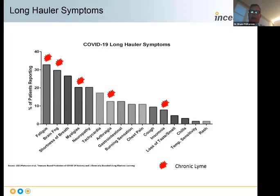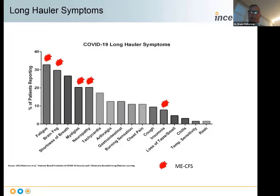The same can be true when we overlaid the ME-CFS major symptoms—fatigue, brain fog, post-exertional malaise. This is an interesting finding given that a JAMA article from two or three months ago went too far in saying that brain fog, fatigue, and post-exertional malaise were the hallmark of long COVID and could be used diagnostically.